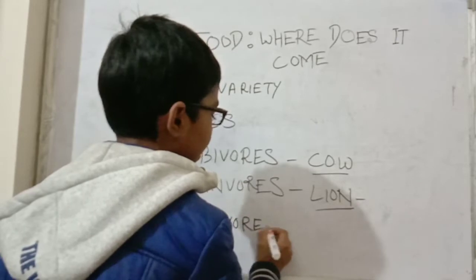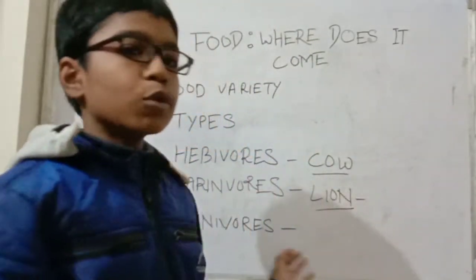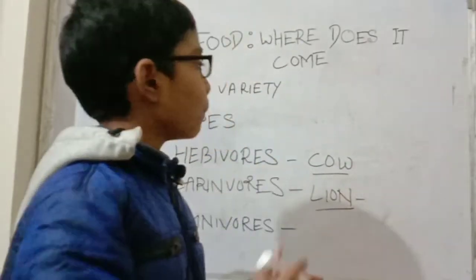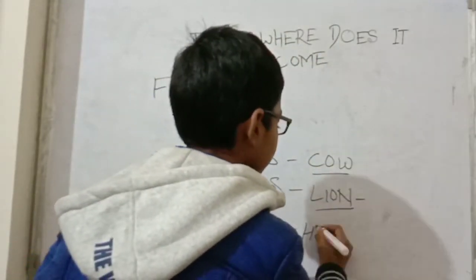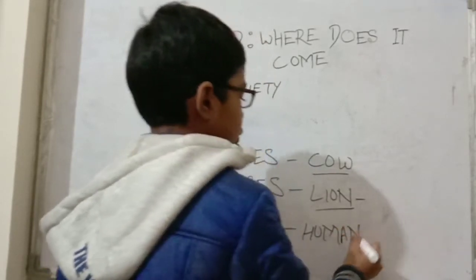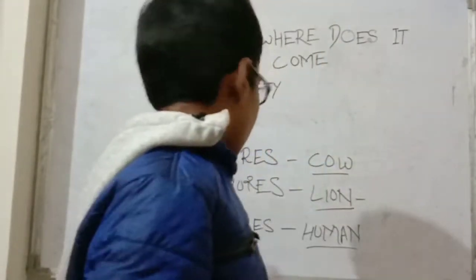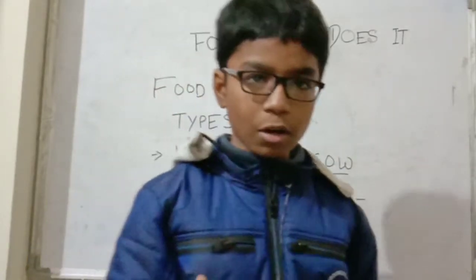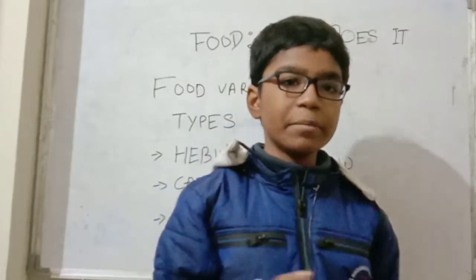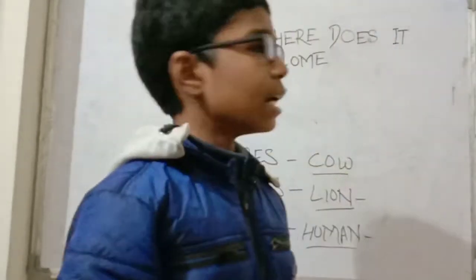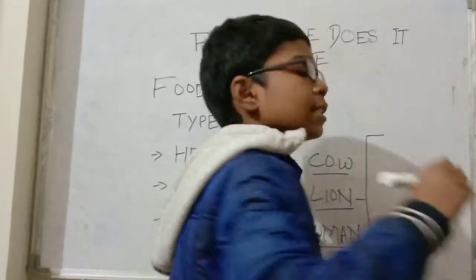On the other hand we have omnivores. Omnivores are animals that are a mixture of herbivores and carnivores — they eat both plant and animal products. Humans are the best example, because humans eat both meat and plant products. Humans have different types of teeth for tearing meat, grinding, and cutting.